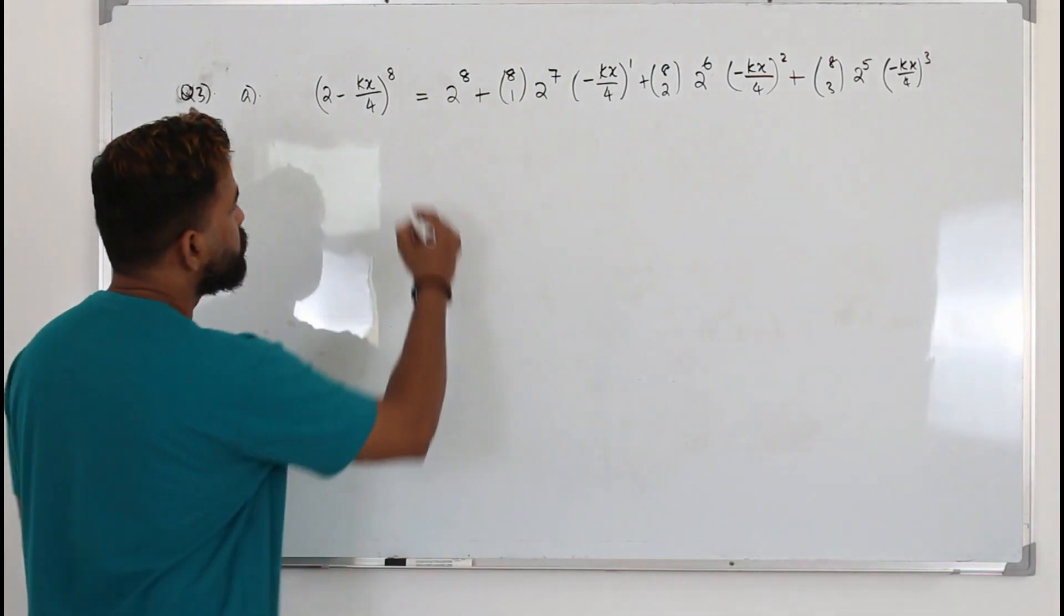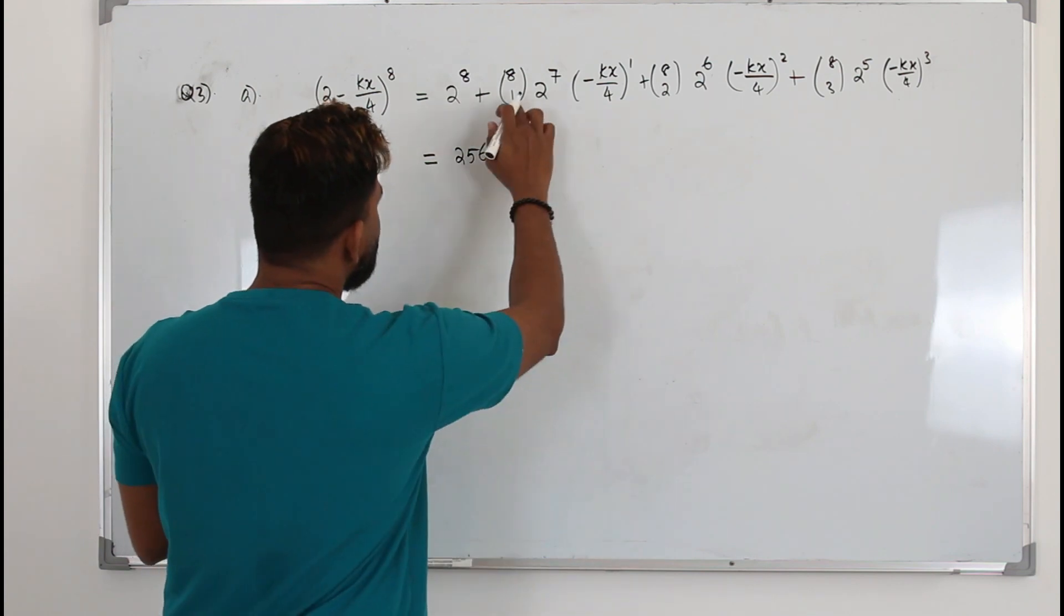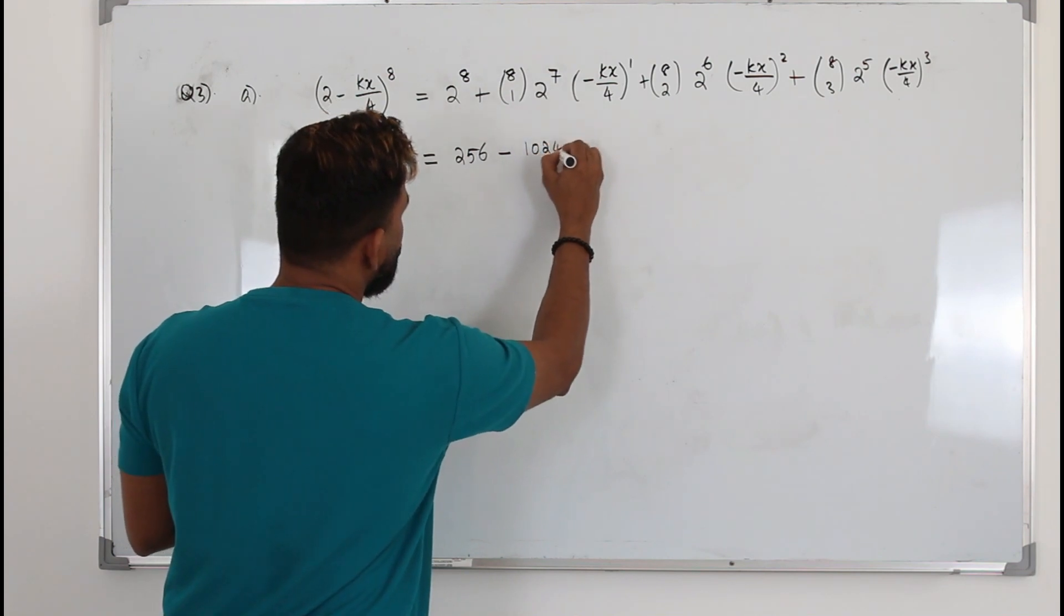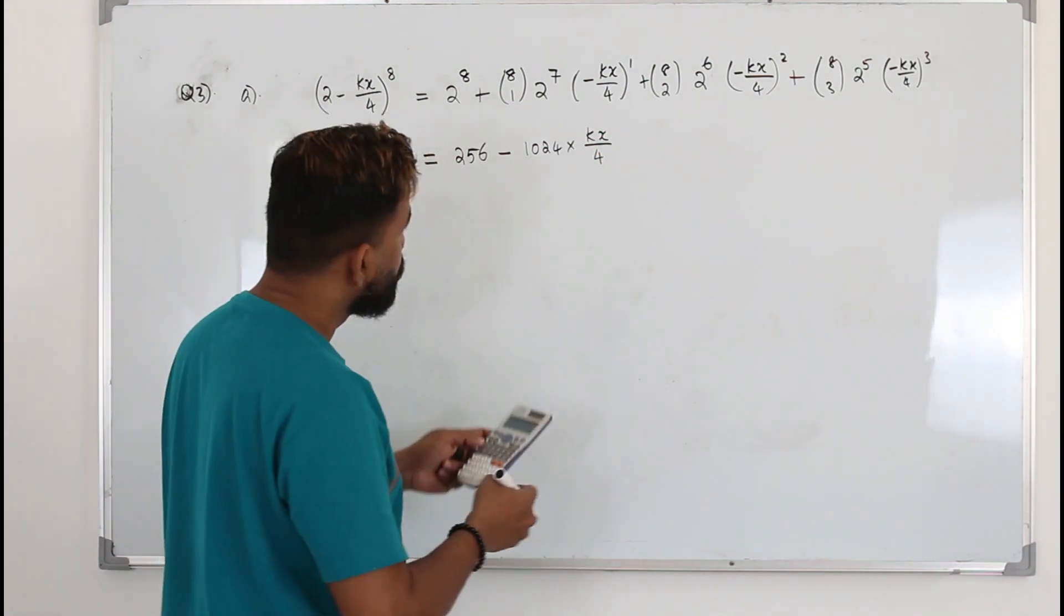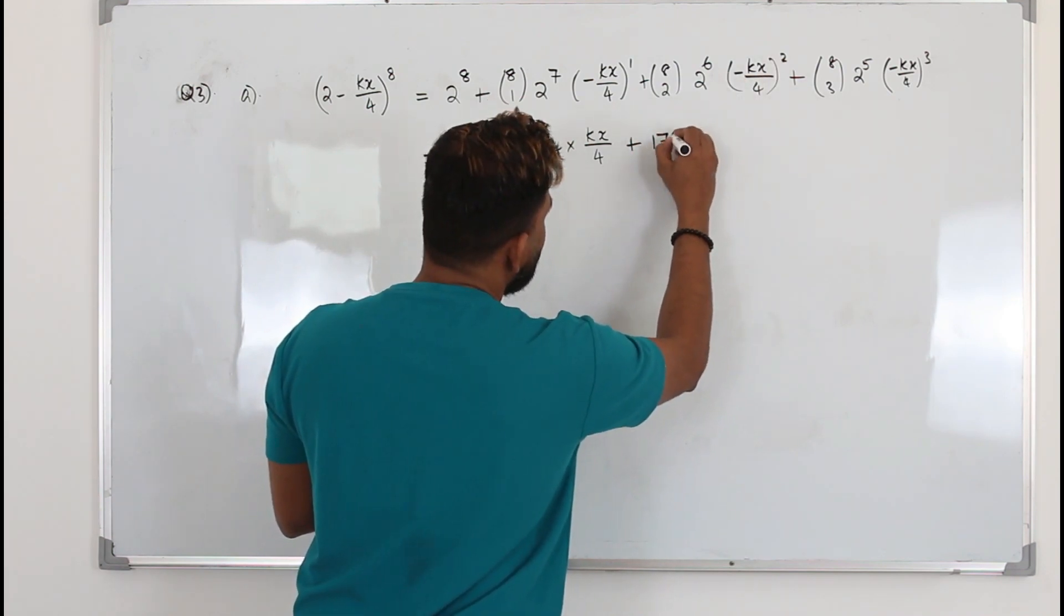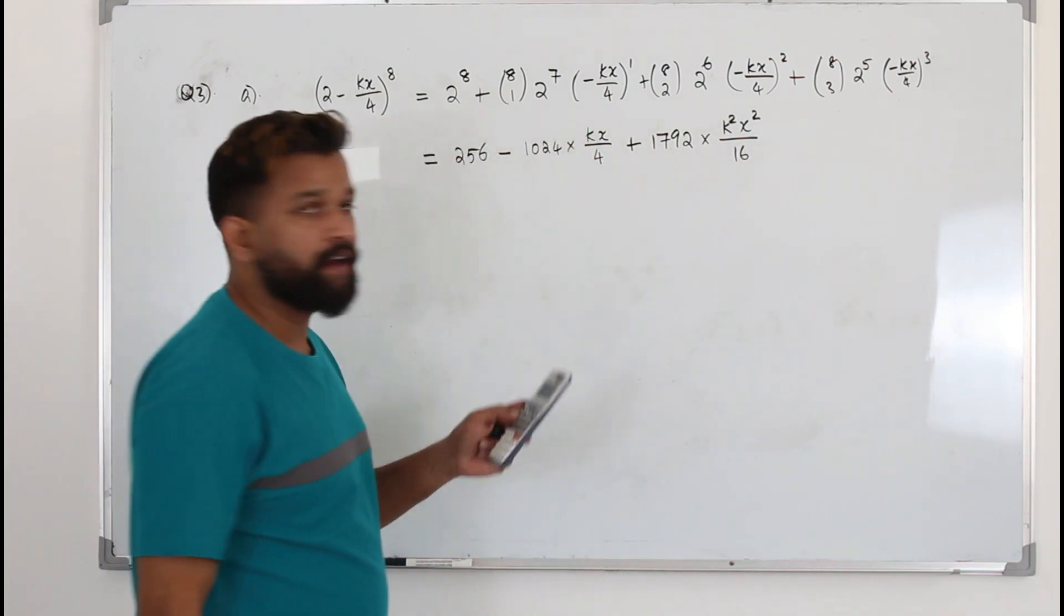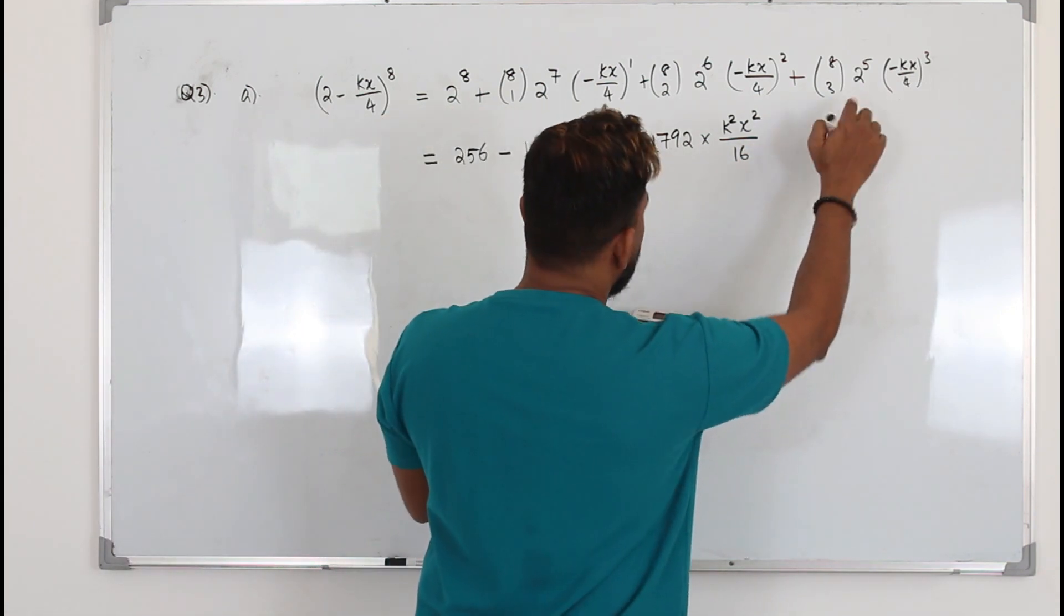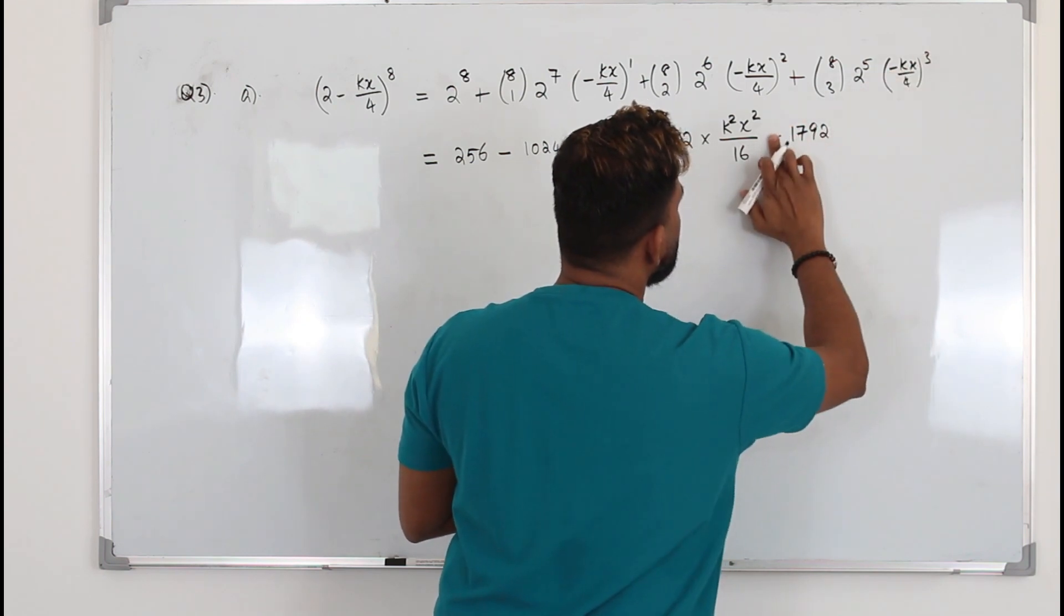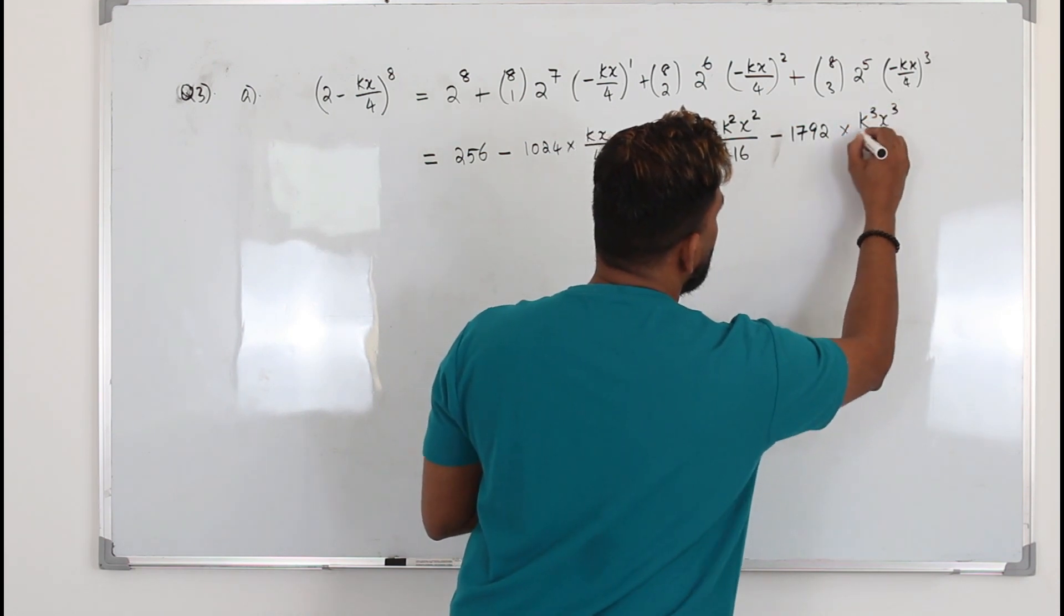Now we need to carefully simplify it. 2^8 is 256. 2^7 times 8 is minus, because plus times minus. 1024 times kx over 4. 8C2 times 2^6, here when you square it, it becomes positive. 8C3 times 2^5, also 1792. Here minus 1, when you cube it, it becomes minus.